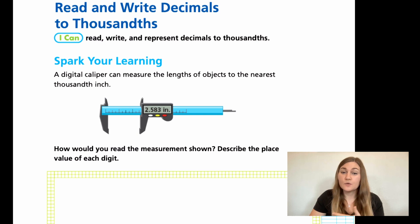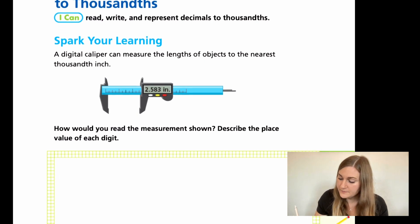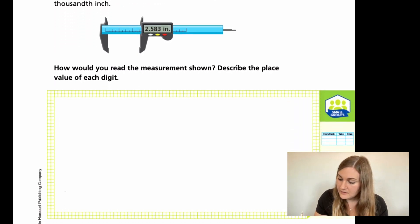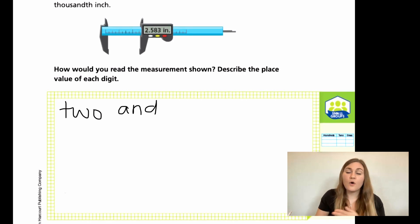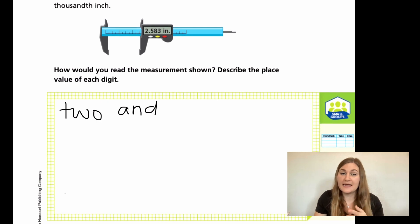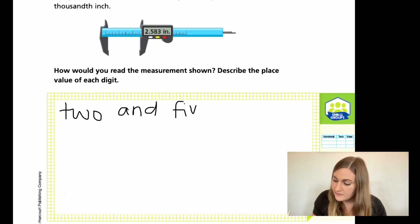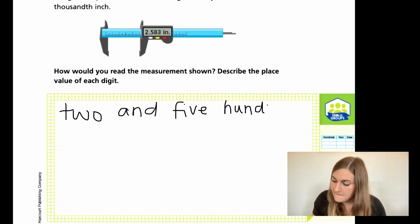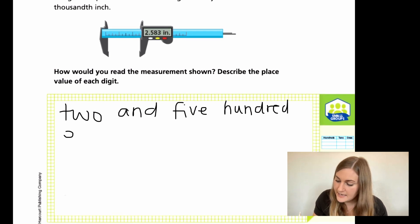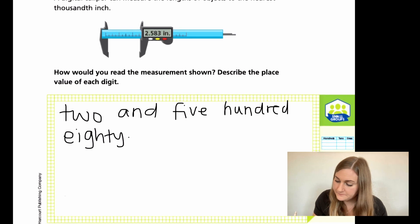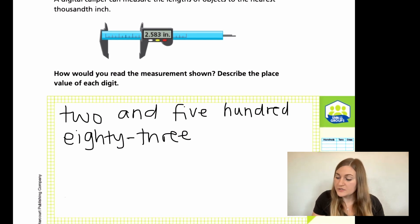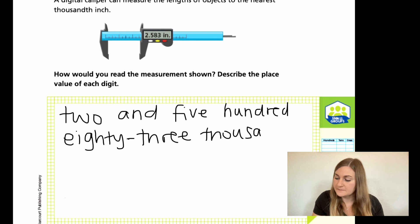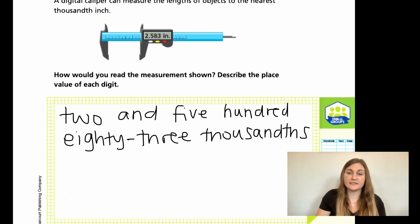So when we want to write it down in word form, we're going to write exactly what I just said. So we're going to write 2, and that decimal place says and. Then we're going to write our whole three-digit number 583. And then we want to end it with the place value that we ended on, which was in the thousandths. And remember that has a THS on it.